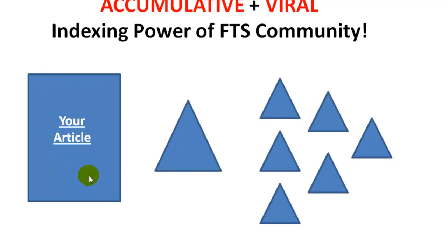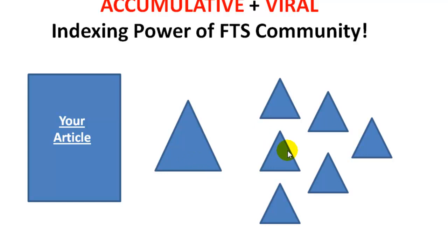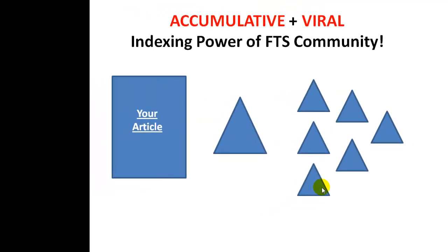So your publication gets indexed even faster and your backlinks in that publication start bringing you value even faster. This is also because it accumulates the viral power of the community. They help you via their own FTS Indexers installed on their computers — they help to speed up the indexing of your publication. And of course you help them in return to speed up the indexing of their publications. It works amazingly.